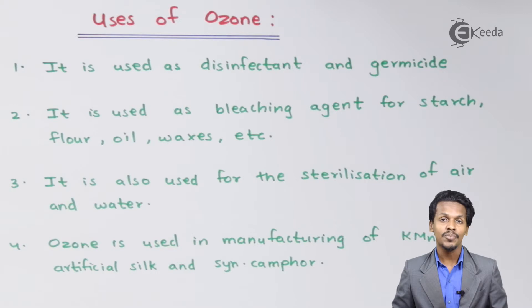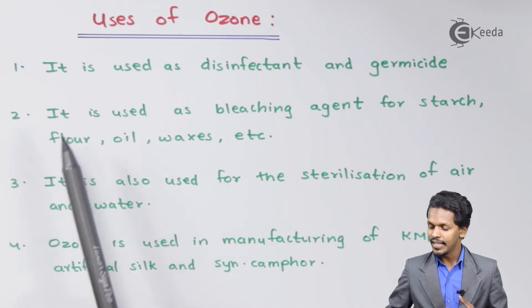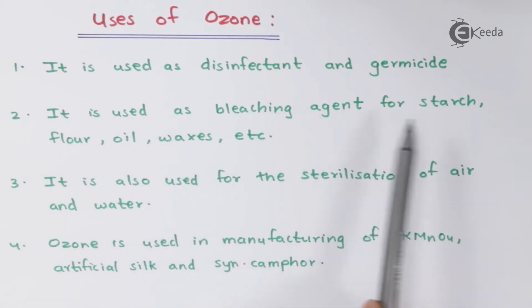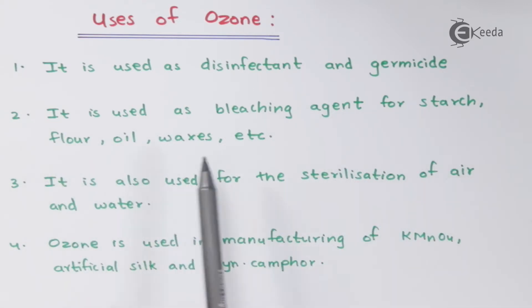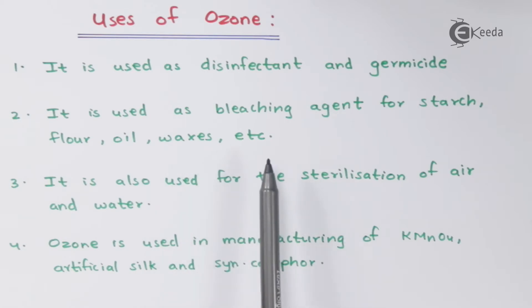Talking about the next point, ozone is used as a bleaching agent for starch, flour, oil, wax, etc.